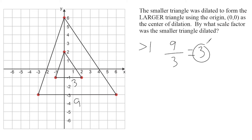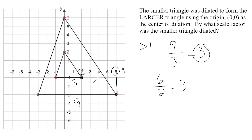If we were shrinking down this triangle instead, we would just take the reciprocal of three, which would be one third. Now, we can also use corresponding points to determine the scale factor. If we take two corresponding points and use their x values — two and six — we write six over two, which still gives us three. Or we can take the corresponding y values: negative three and negative one. Writing negative three over negative one also gives us positive three, because two negatives when divided form a positive.